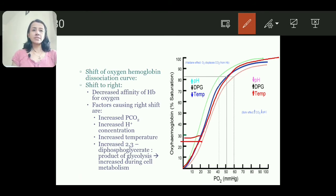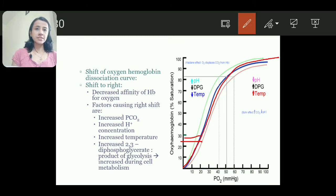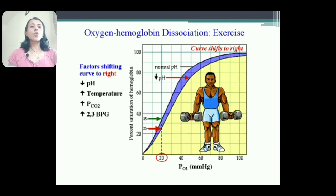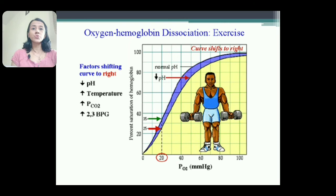All these conditions are commonly seen during exercise — carbon dioxide concentration increases, temperature increases, H+ concentration increases, and 2,3-diphosphoglycerate increases because of metabolism. Therefore during exercise or when tissues are active, there is shift to right.